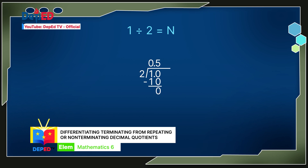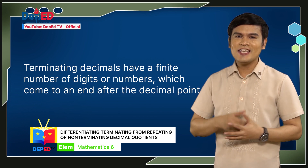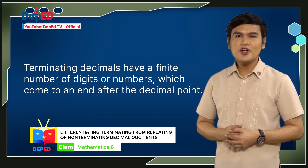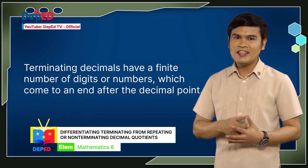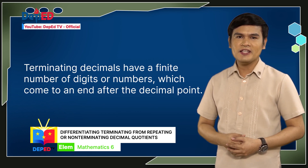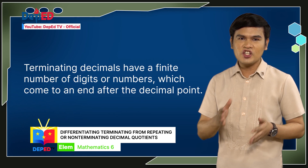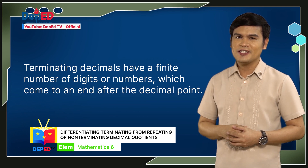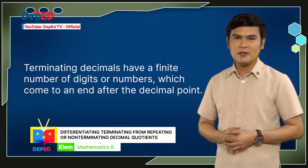Therefore, 5 tenths is a terminating decimal. The word terminate means end or stop. A decimal that ends is a terminating decimal. Terminating decimals have a finite number of digits or numbers, which come to an end after the decimal point.